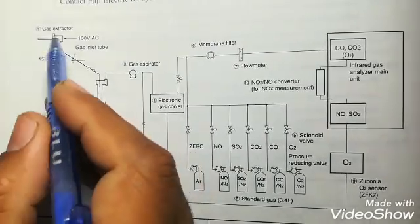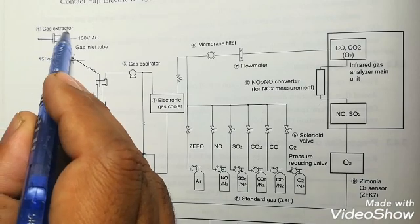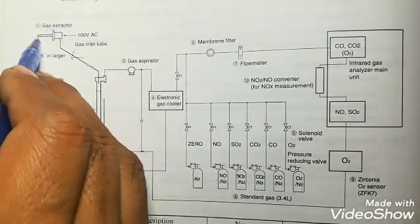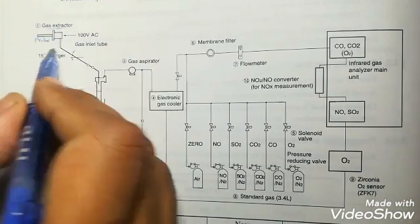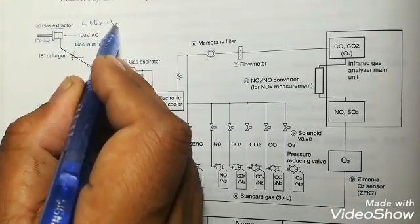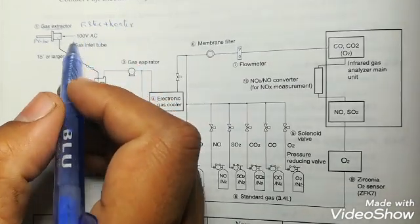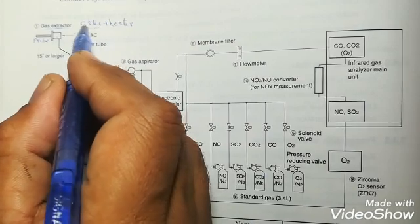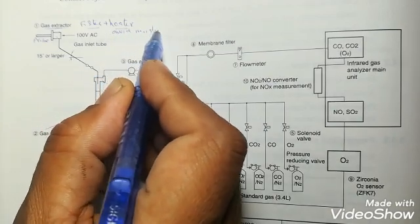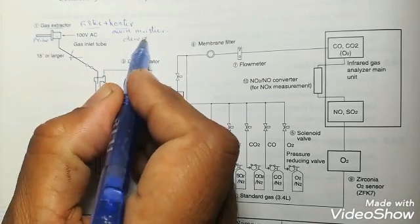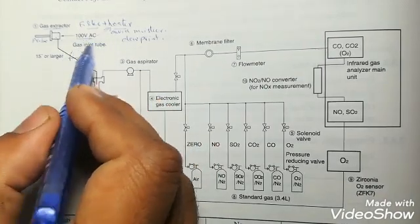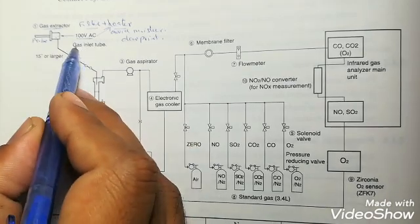Here you can see the flow diagram of a gas analyzer. This is the gas extractor. The gas extractor has a filter which is stainless steel filter and a heater. This filter filters out the particles and dust particles inside the sample, and this heater heats the temperature of the sample so it doesn't reach the dew point.